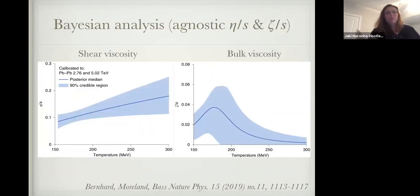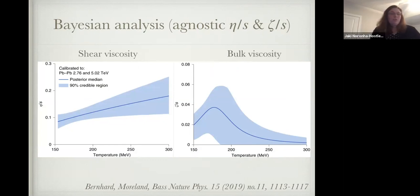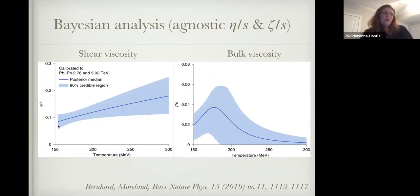Another approach is to be completely agnostic: take a Bayesian analysis, put in some functional form for shear and bulk viscosity, and see what the data tells us. Recent results from the Duke group, doing theory-experiment comparisons, confirm we do indeed expect a very small shear viscosity, and a minimum of bulk viscosity around the phase transition.